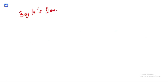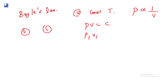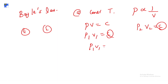According to Boyle's law, at constant temperature, pressure is inversely proportional to volume, so PV = constant. Between state 1 and state 2, P₁V₁ = P₂V₂.